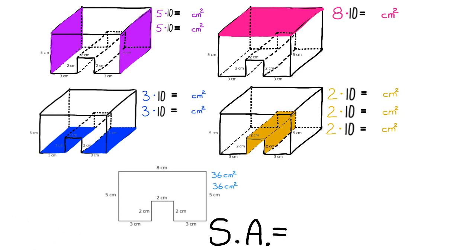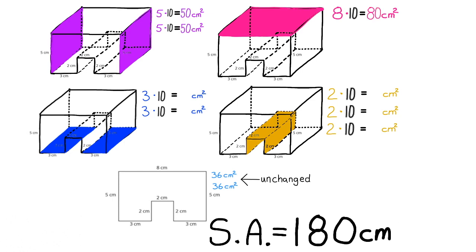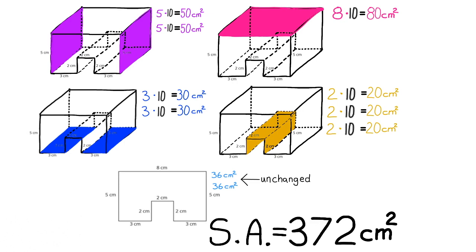The way the base is pictured right now, it's laying on one of its sides. So remember, if it were standing on its base, the height is doubled, changing from 5 centimeters to 10 centimeters in height. The surface area of the bases is unchanged. And we can add all the surface areas together, making the surface area of this new prism 372 centimeters squared.